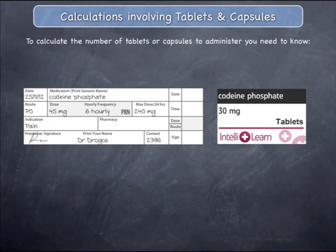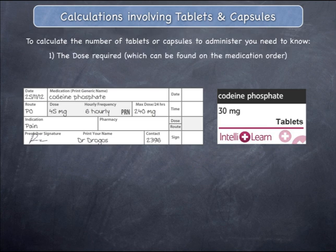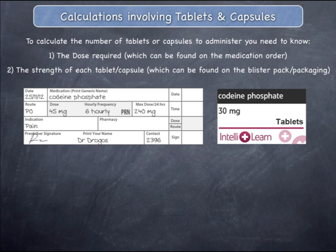To calculate the number of tablets or capsules to administer to the patient, you need to know the dose that the patient must receive in grams, milligrams, or micrograms. This information is always provided on the medication order in the box labelled Dose. You also need to know the strength of the medication. If the medication is available in a blister pack, always check the blister pack itself, rather than the box, for information about the strength of the tablet or capsule.